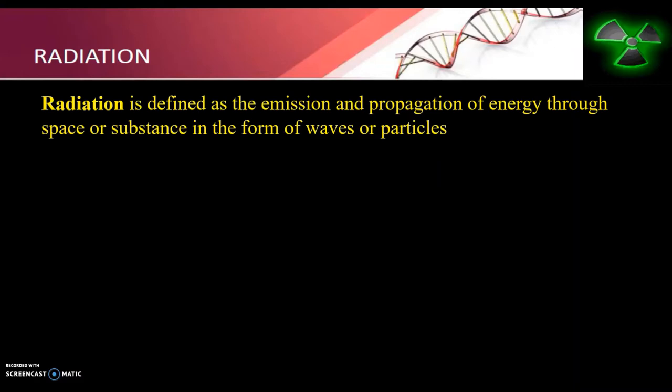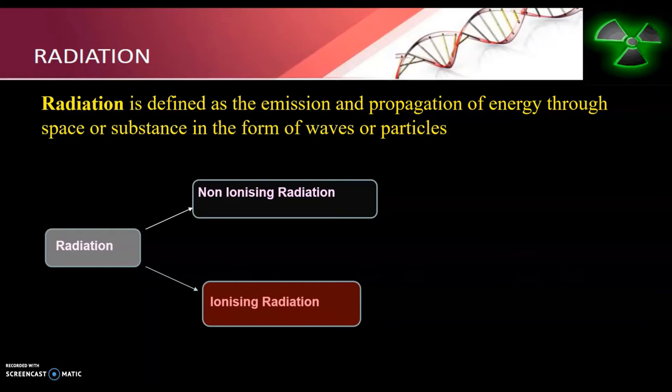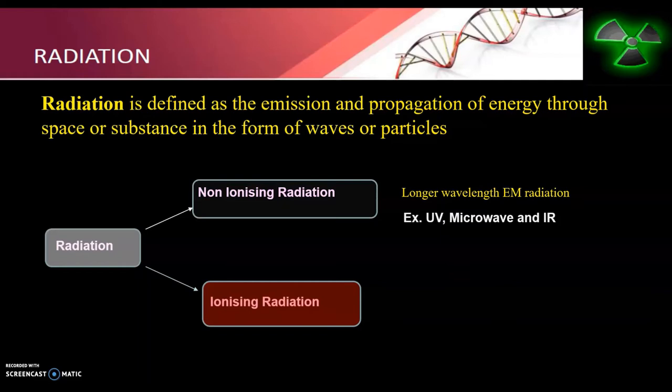Radiation is defined as the emission and propagation of energy through a space or substance in the form of waves or particles. Radiation is categorized into two parts: non-ionizing radiation and ionizing radiation. Non-ionizing radiation is potentially less harmful — it has less energy, and it can cause molecules to move or vibrate in an atom but cannot remove any electron from the atom. Examples include UV, microwave, and infrared.